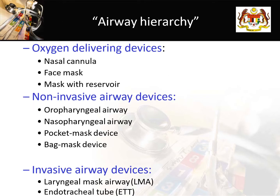According to the airway hierarchies, the basic airway devices include oxygen-delivering devices such as nasal cannula or nasal prong, face mask, mask reservoir (commonly called high-flow mask), and non-invasive airway devices including the oropharyngeal airway (OPA), nasopharyngeal airway, and pocket mask. We will also talk about invasive airway devices: the LMA and the endotracheal tube.